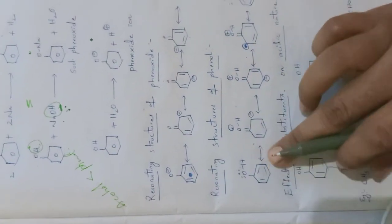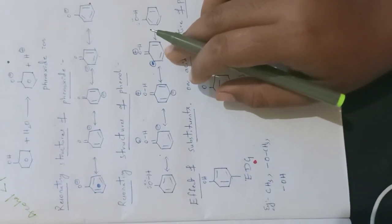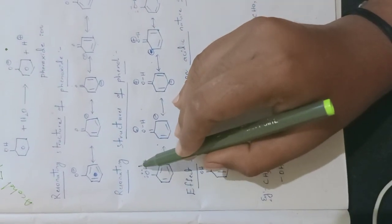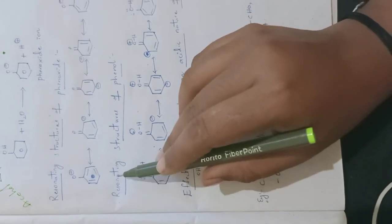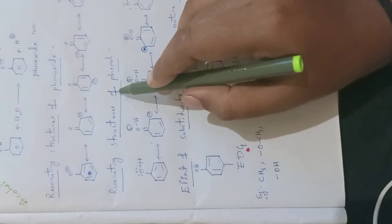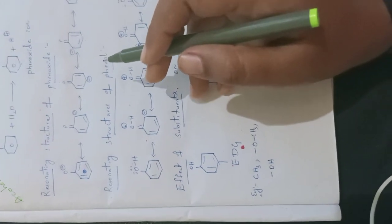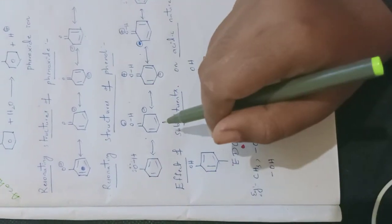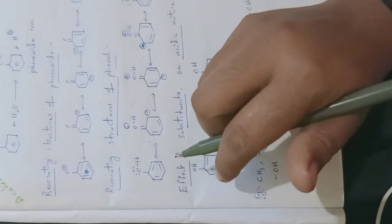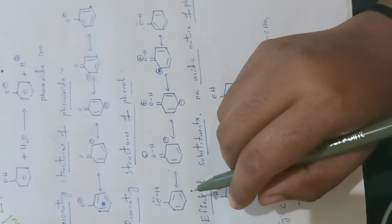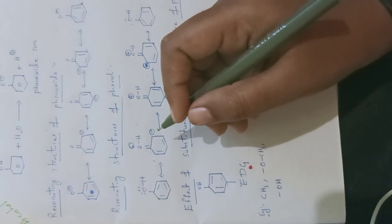These are the resonating structures of phenols. We can see the presence of resonating structures. Whatever lone pairs of electrons are present on the oxygen of phenol — these two lone pairs are freely available and can easily participate in resonance. But the same kind cannot be seen in the case of alcohols. Alcohols also contain oxygen with lone pairs of electrons, but those lone pairs do not participate in delocalization. If lone pair of electrons involve in delocalization with pi bonded electrons, that is known as resonance.